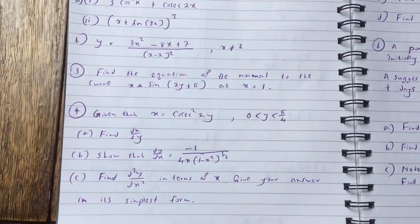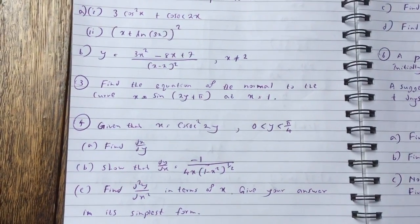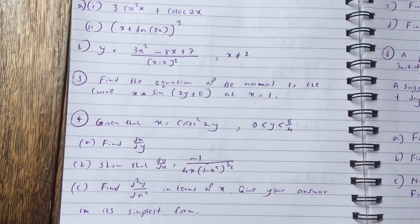Question 3, find the equation of the normal to the curve y equals sine 2y plus pi at x equals 1.